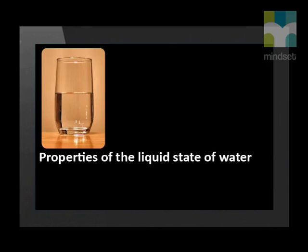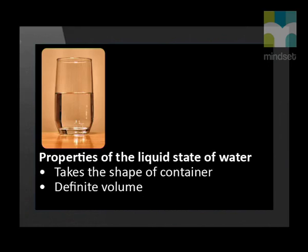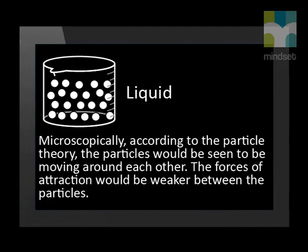What is a liquid? A liquid is a form of matter where the substance has a fixed volume but takes on the shape of the container in which it is placed. We can pour a liquid. Properties of the liquid state of water: it takes the shape of the container, has a definite volume, and is not compressible. Microscopically, according to the particle theory, the particles would be seen to be moving around, and the forces of attraction would be weaker between the particles.